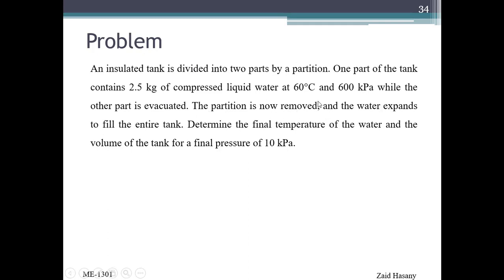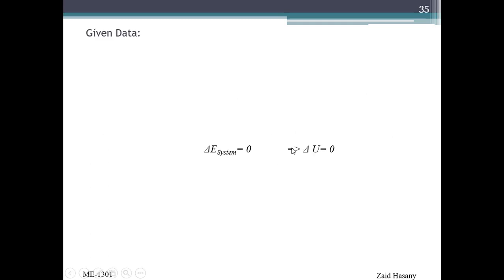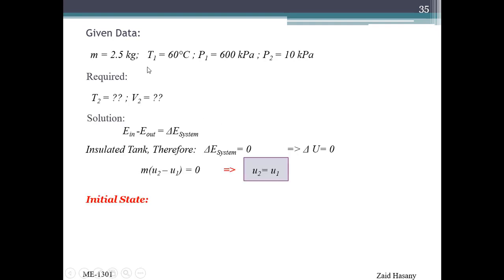The partition is now removed and the water expands. Since the evacuated part has no air, there is negative pressure, so pressure decreases. We need to determine the final temperature and volume of the tank at a final pressure of 10 kPa. Given: T1 is 60 degrees Celsius, P1 is 600 kPa, P2 is 10 kPa.